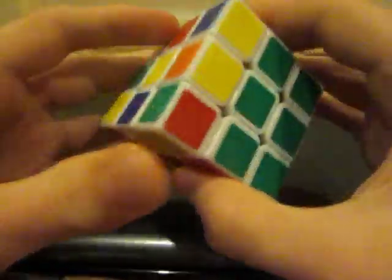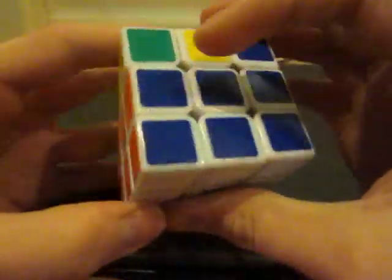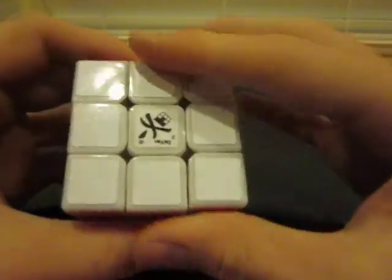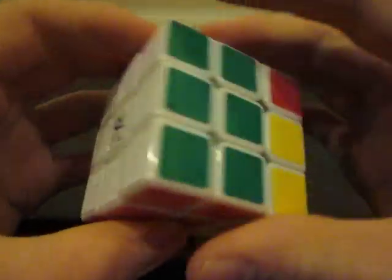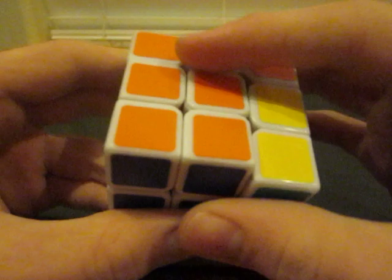Now, if you did all those steps properly, and didn't mess up any of your algorithms, your cube should look like this with the white face completely solved, and the first two layers completed.